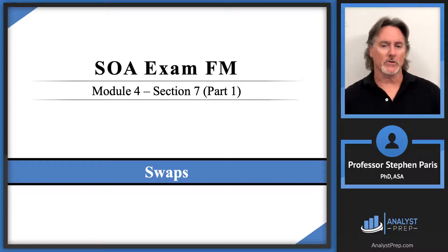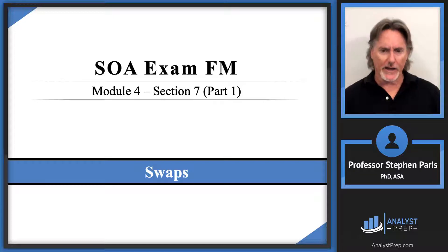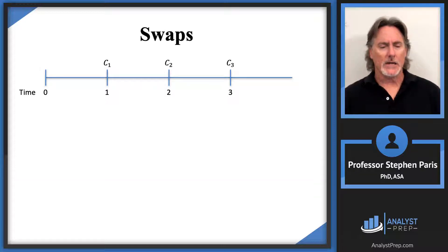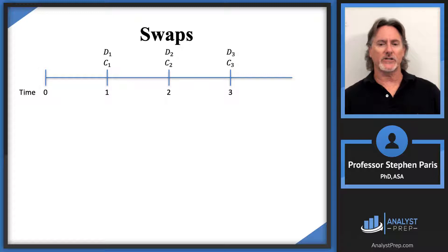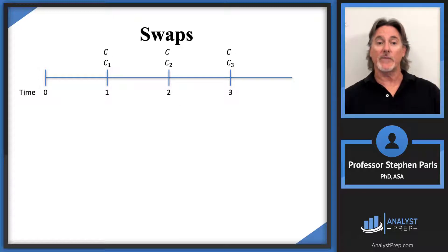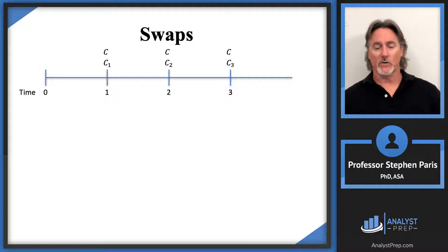In this video, we're going to talk about something called swaps. The idea of a swap is pretty easy. So let me show you what the idea is with a timeline. We're going to start with some set of payments, and all a swap does is swap one set of payments for another set of payments. Generally, the context is that the original set of payments are non-level payments, and we want to swap those for a set of level payments. That's the context for the rest of the video.